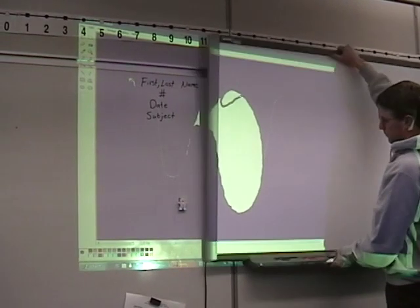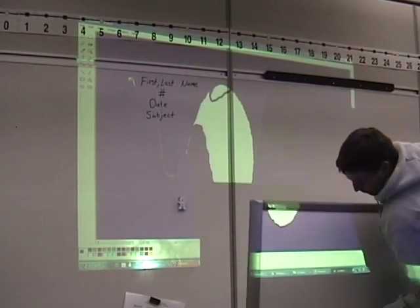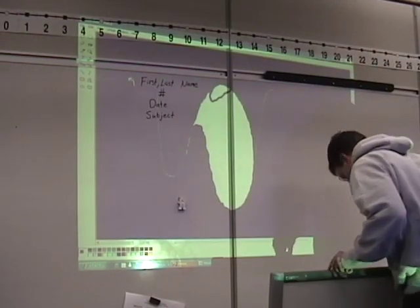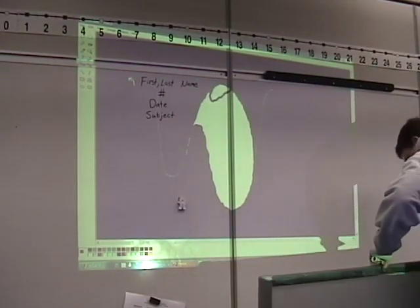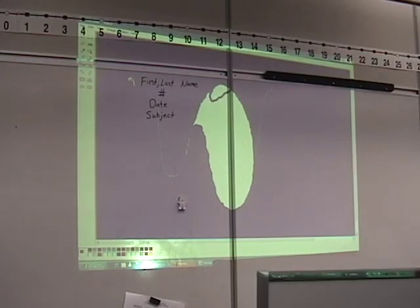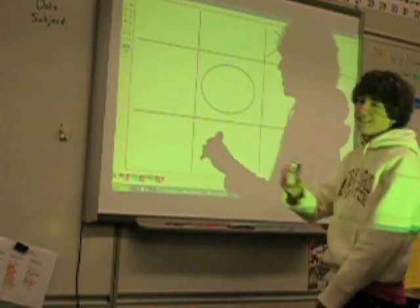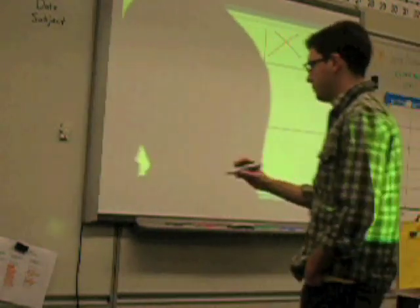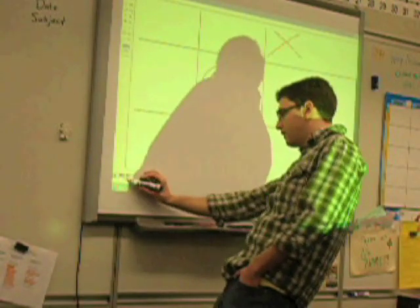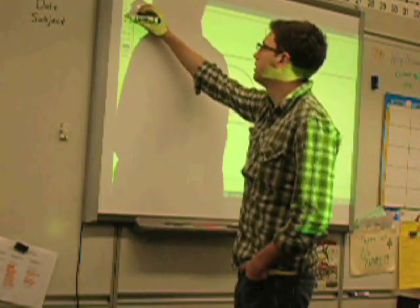Needless to say, the Wiimote wins hands down in this area. Vendor electronic whiteboards require physical hardware to be moved, and you are limited by the size of the screen. With the Wiimote, you have virtually no limits on how big your screen can be, where you can place it, etc. Johnny Lee demonstrates this by projecting it on a table and using it as an interactive tabletop.